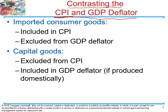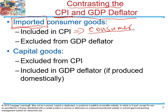When we calculate consumer price index, we take into consideration goods that are produced outside of the United States. Because consumer price index is trying to reflect how the cost of a typical consumer changes over time. We consume a lot of goods produced outside the United States — think about your furniture, computers, cell phones, book bags, water bottles — most likely made somewhere outside the United States.